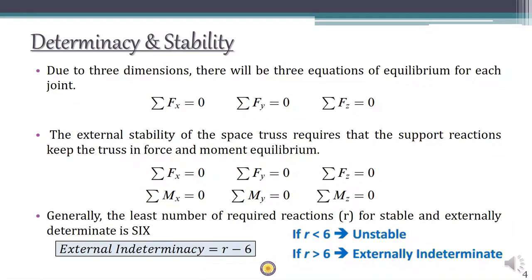Now let's discuss stability and determinacy conditions for a space truss. It is important to note that at every joint of a space truss there are three equations of equilibrium: sigma Fx = 0, sigma Fy = 0, sigma Fz = 0. The external stability of the truss depends upon the support reactions, which should satisfy all force and moment equilibrium.